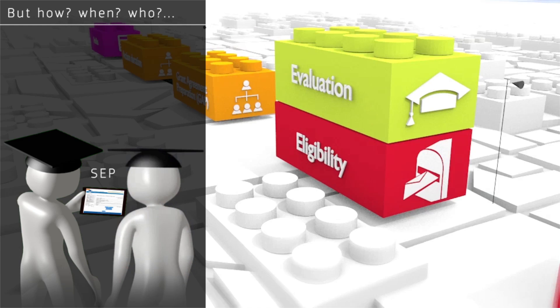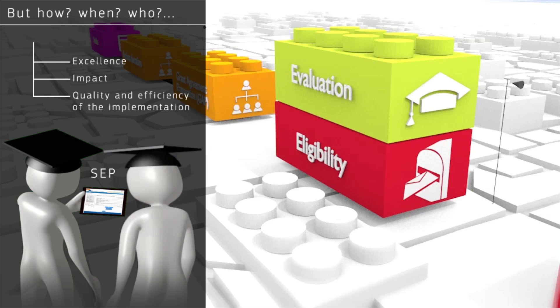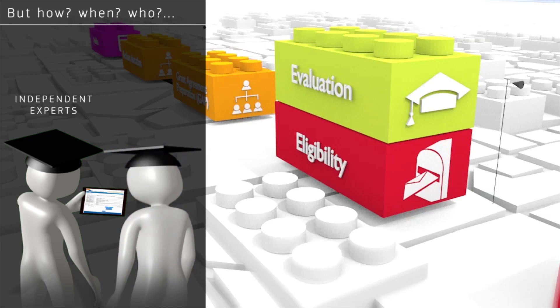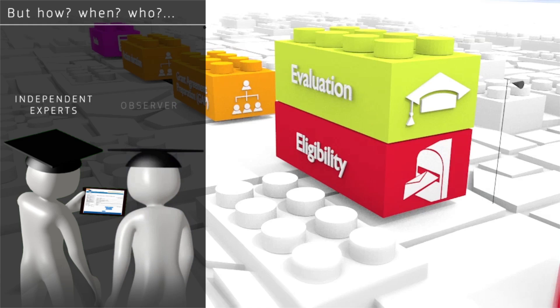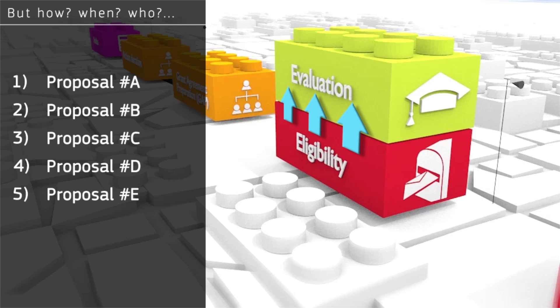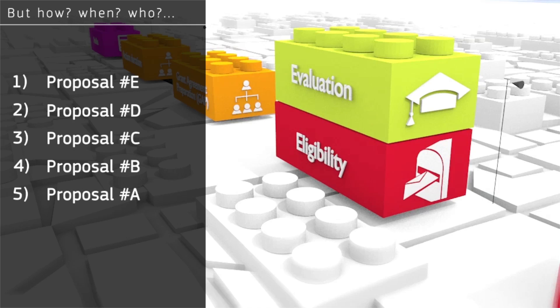Proposals are evaluated on the basis of the criteria: excellence, impact, and quality and efficiency of implementation. The European Commission relies on independent external experts, both evaluators and observers, to ensure only proposals of the highest quality are selected for funding. At the end of the evaluation phase, proposals submitted for a specific call are ranked, and on the basis of this ranking, the EU decides which proposals will be funded.